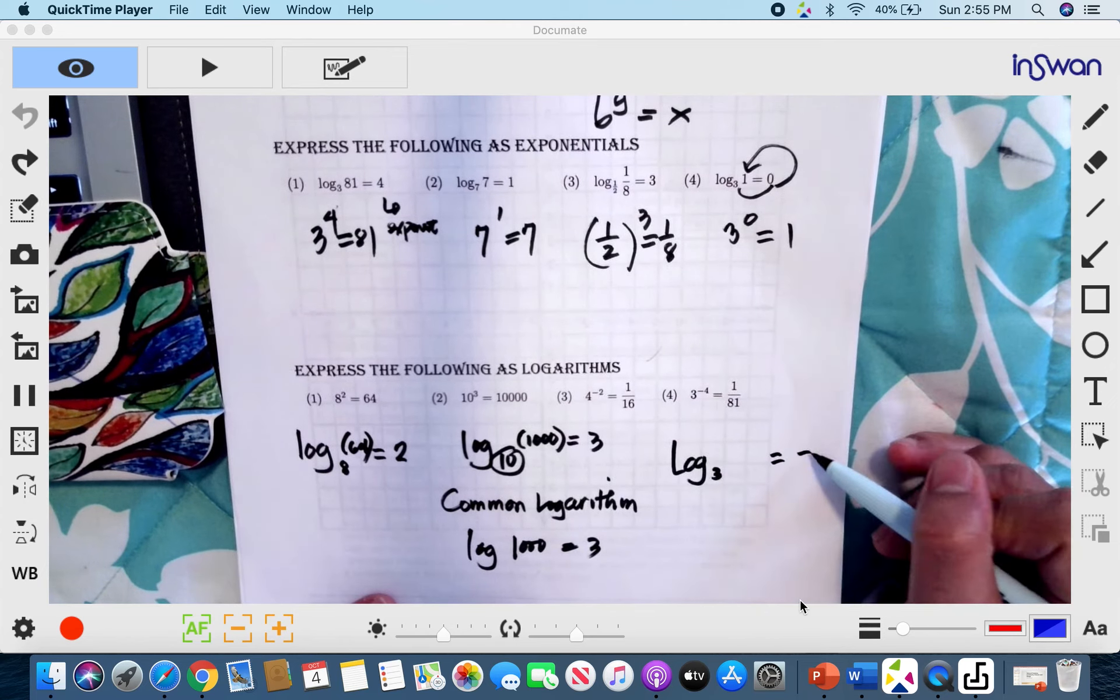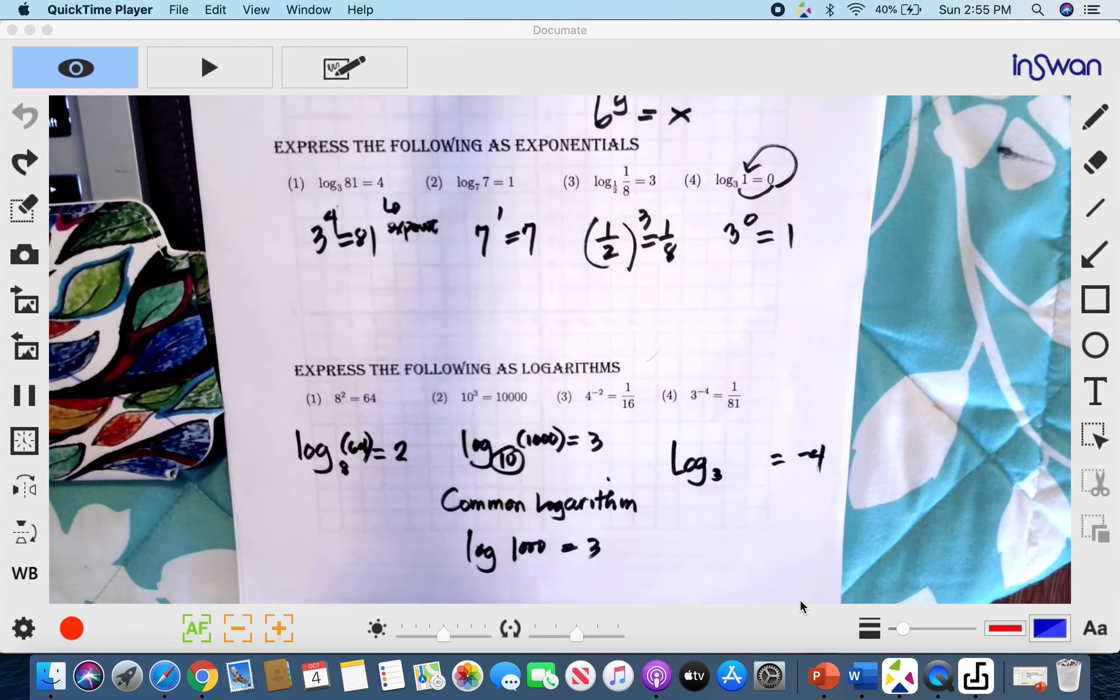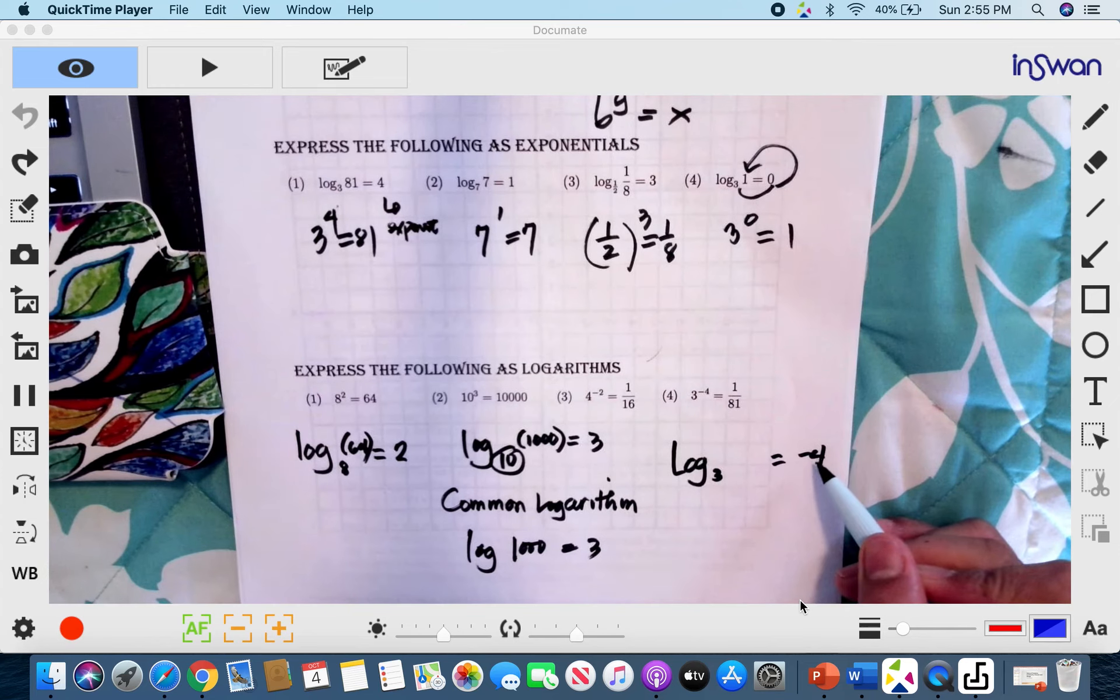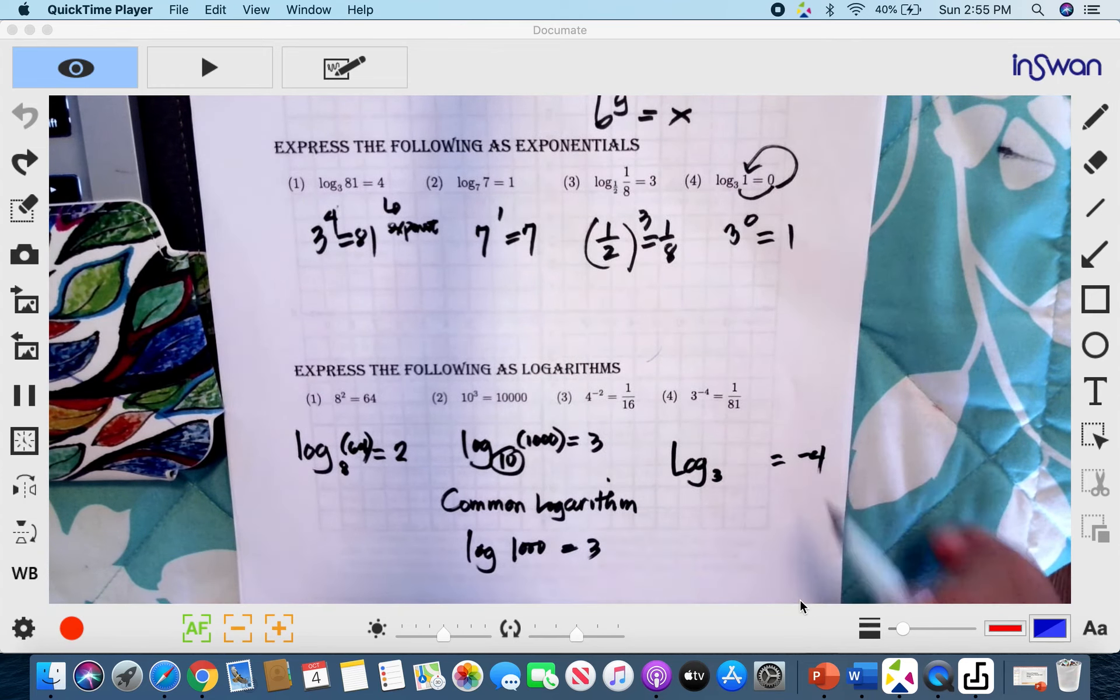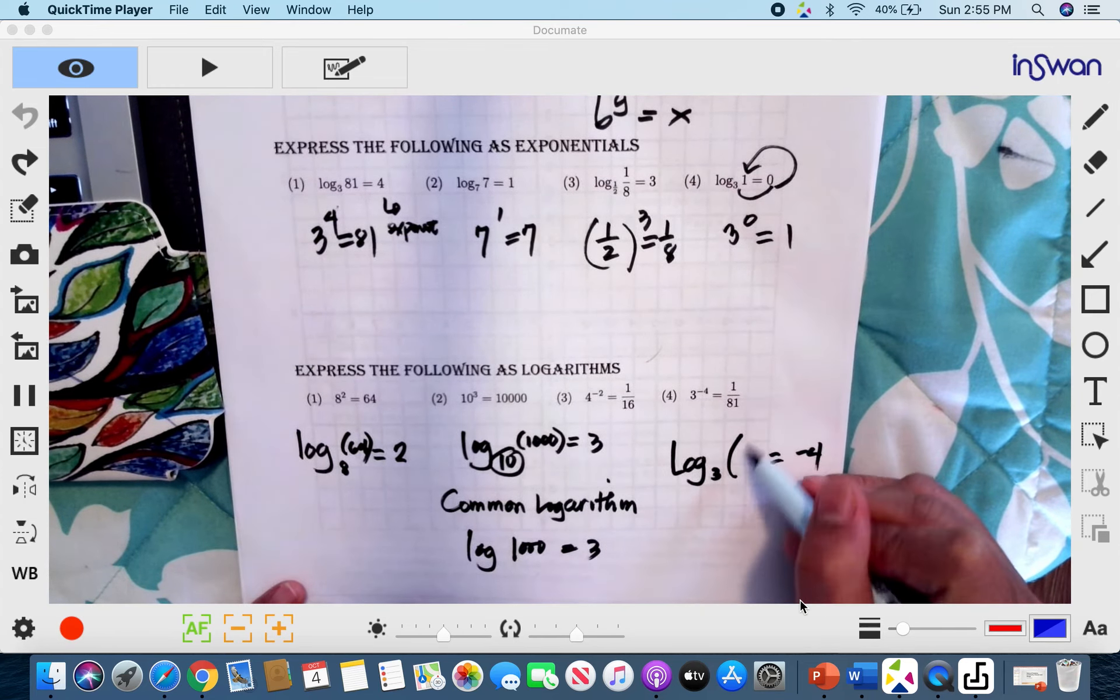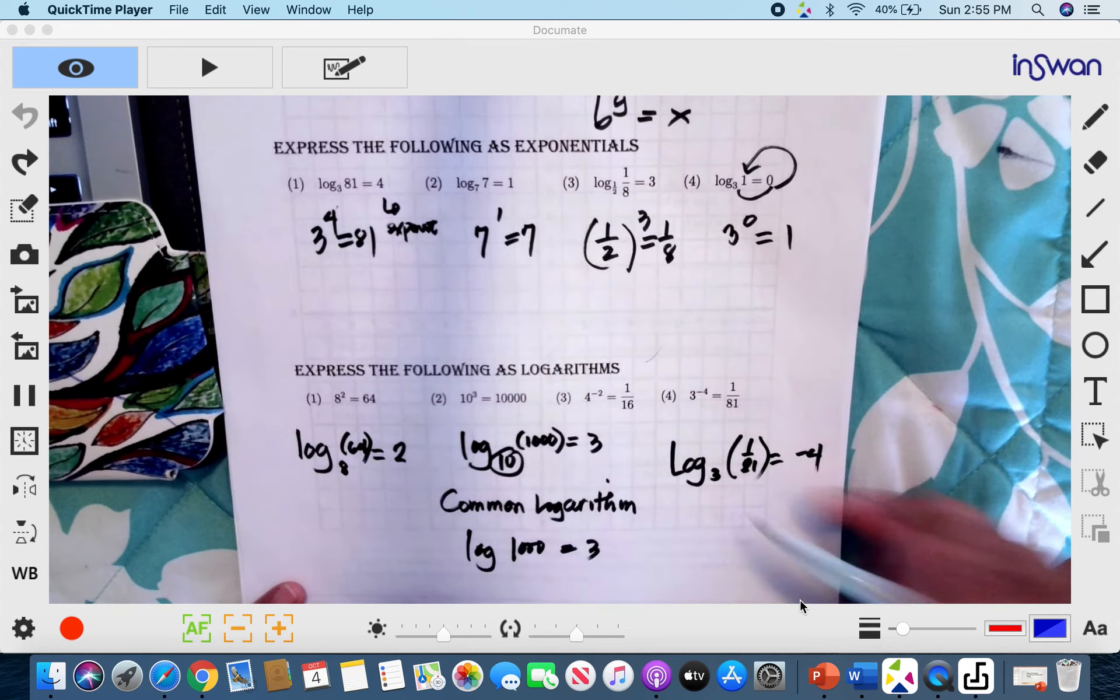And of course, our exponent is negative 4. So the logarithm should be equal to negative 4 because the logarithm and negative 4 are just the same. And our power is 1 over 81.